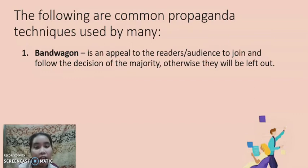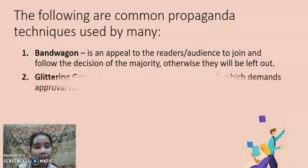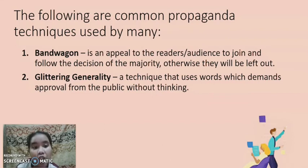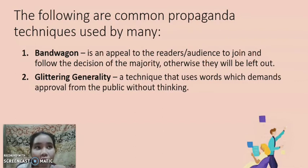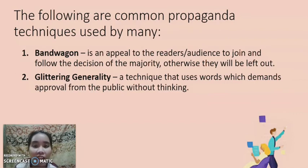The second technique is glittering generality — it uses words that demand approval from the public without thinking. An example: 'Please be patient and understanding about the inconvenience brought by the vigorous risk-checking in every establishment, especially in public transportation areas. The authorities believe that your safety is their primary concern.' This technique demands your approval even before you have thought it through or experienced the situation yourself.